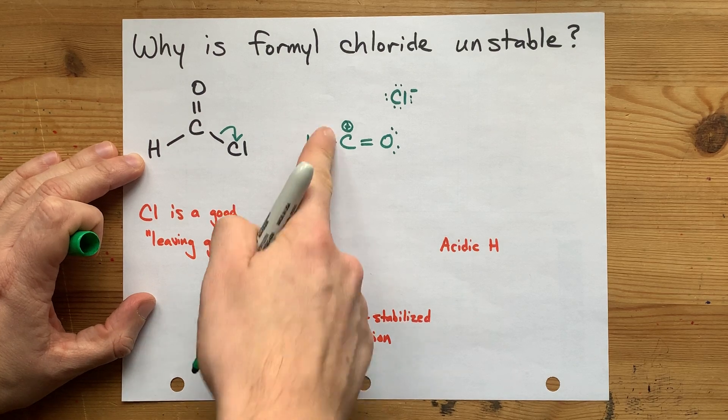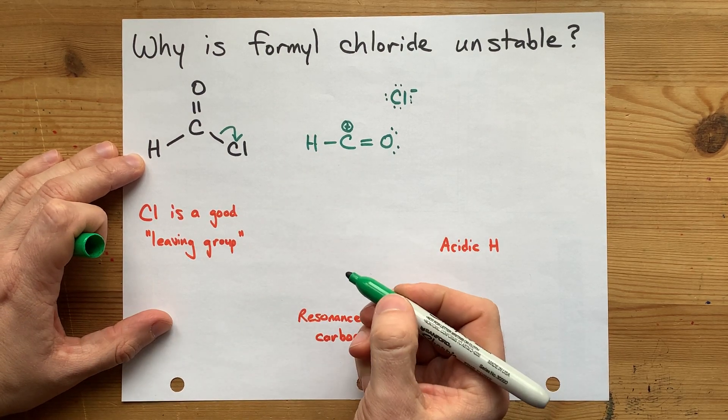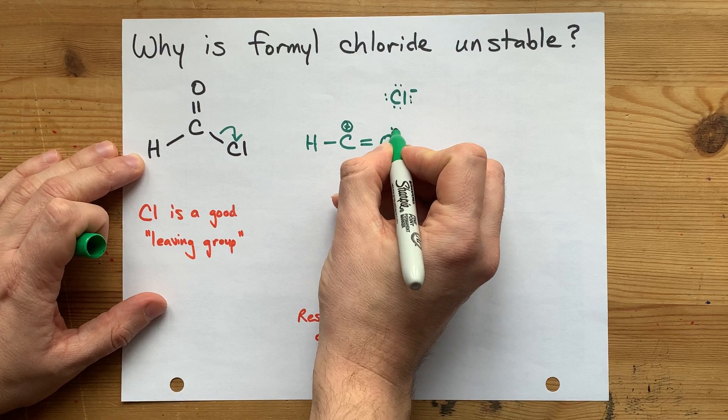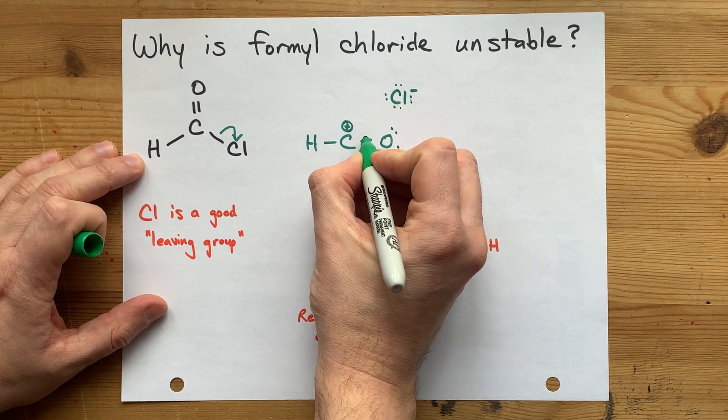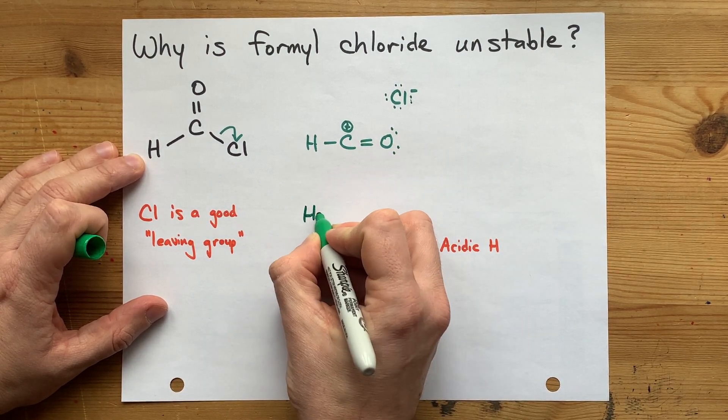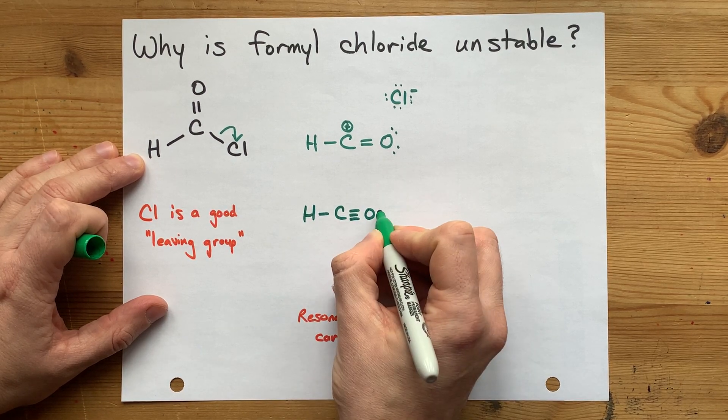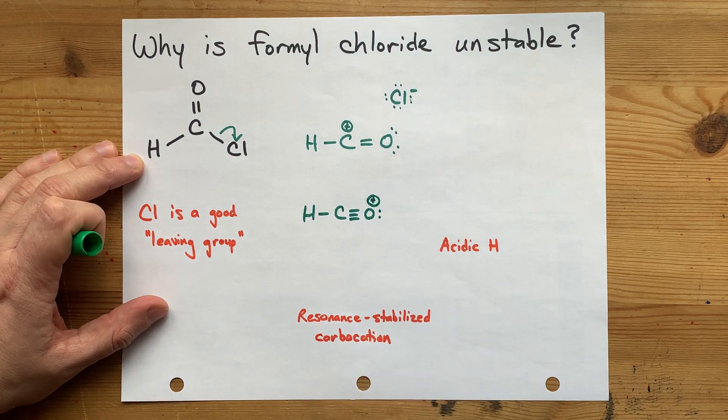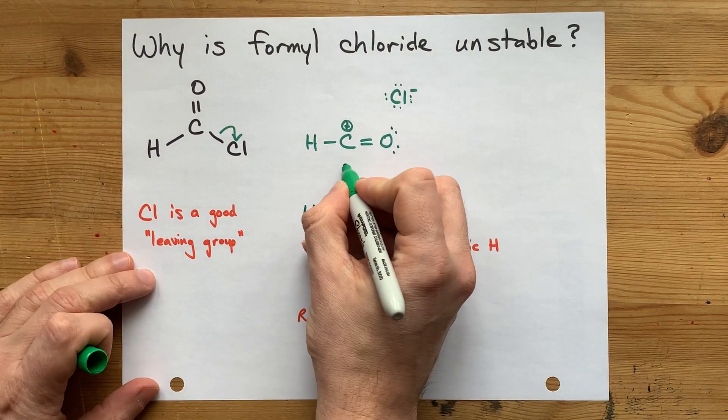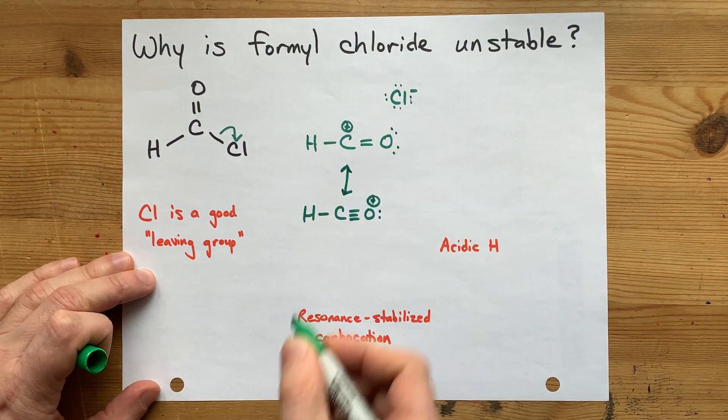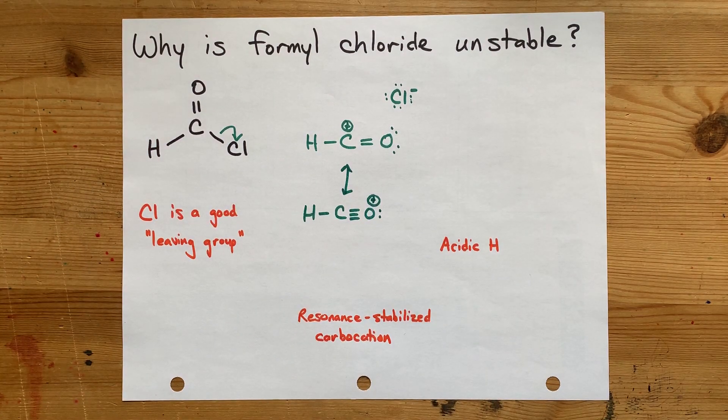Now this here is a resonance stabilized carbocation. What I mean is that this oxygen could donate two electrons to complete the octet on carbon. Make that a triple bond. That gives us a positive charge here, a positive formal charge there. This is just a little bit of resonance which helps to stabilize the carbocation.